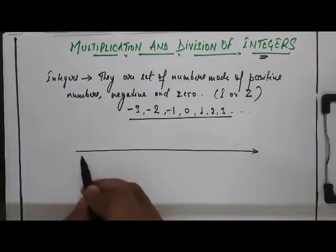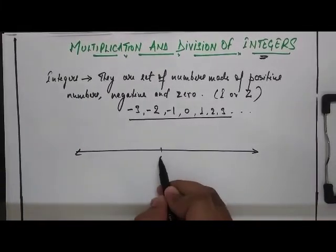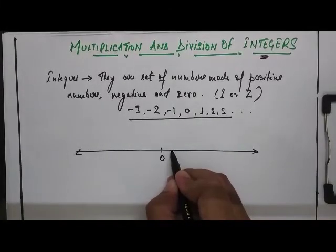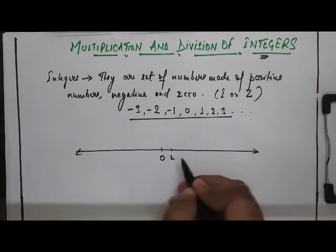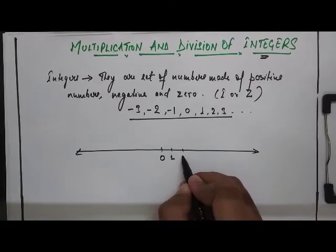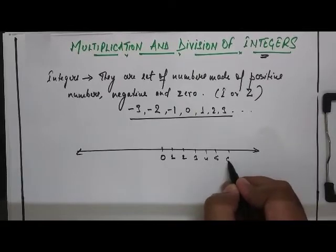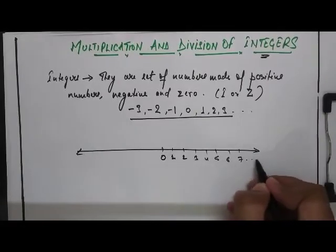Suppose this is our number line. In the middle the number lies 0. On the right hand side we all are familiar that the numbers which are taken on the right hand side on the number lines are always positive like 1, 2, 3, 4, 5, 6 and 7 and so on.